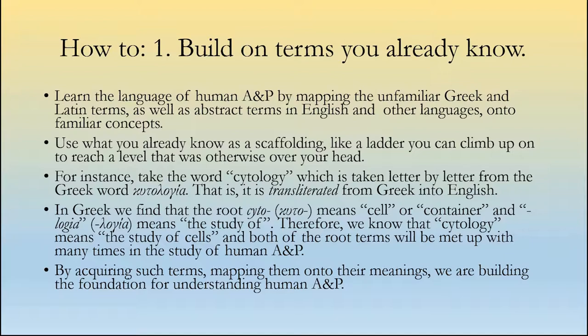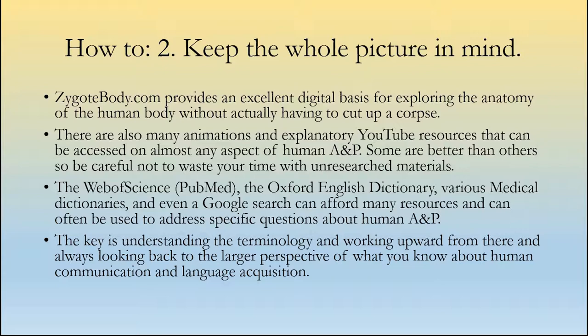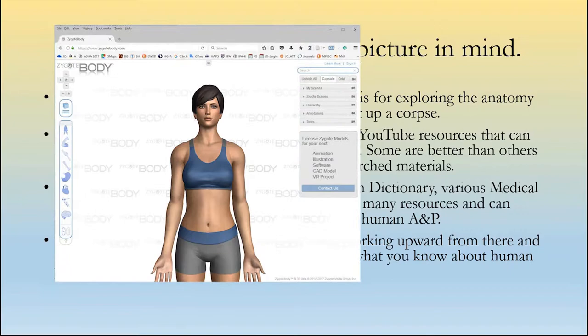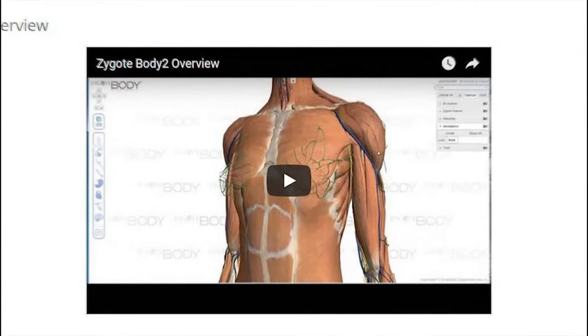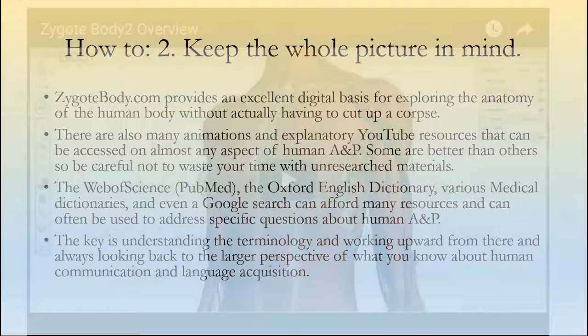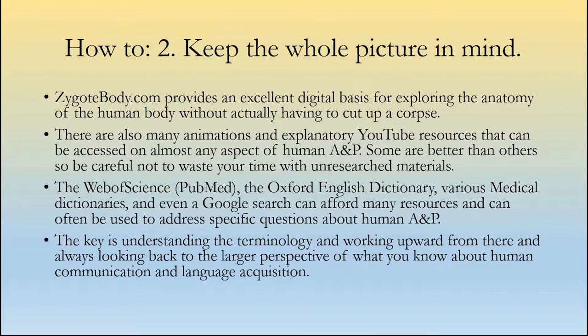Next, consider point two about how to master A&P: keep the whole picture in mind. ZygoteBody.com provides an excellent digital basis for exploring the anatomy of the human body without actually having to cut up a corpse. There is an excellent tutorial at ZygoteBody.com showing you how to use that program, and it's reasonably inexpensive. There are also many animations and explanatory YouTube resources that can be accessed on almost any aspect of human anatomy and physiology — some are better than others, so be careful not to waste your time with unresearched materials.